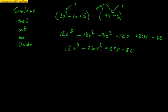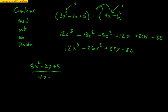Lastly, we have division. Let's say we have (3x squared minus 2x plus 5) all divided by (4x minus 6). Now when we're dividing, we're only allowed to divide or cancel things out if they're the same factor.